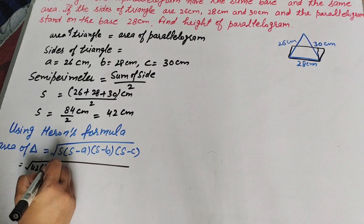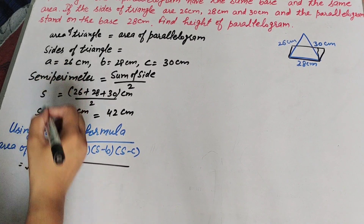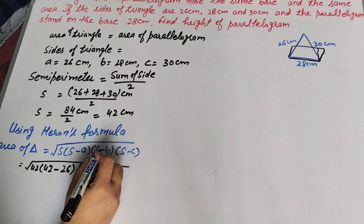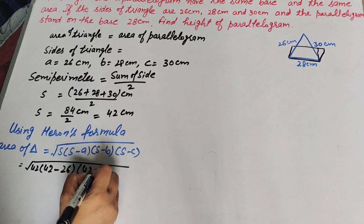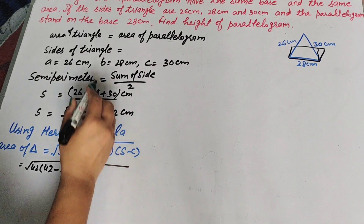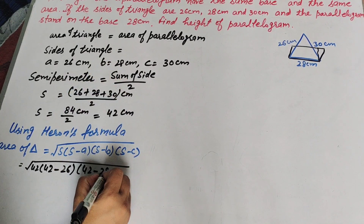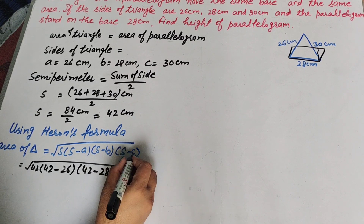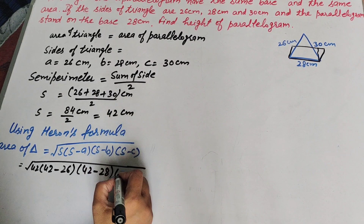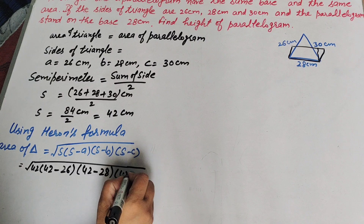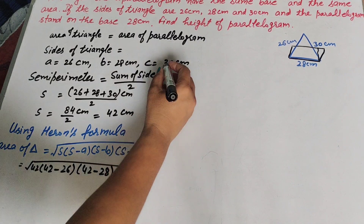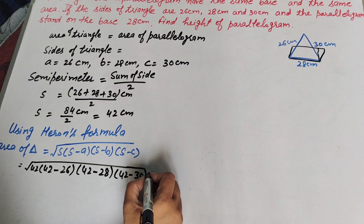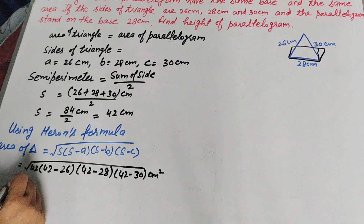Computing each factor: s − a = 42 − 26 = 16, s − b = 42 − 28 = 14, s − c = 42 − 30 = 12. So Area = √(42 × 16 × 14 × 12) cm².